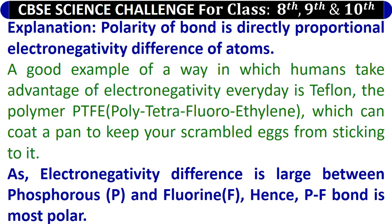Explanation: polarity of a bond is directly proportional to the electronegativity difference of atoms. A good example of a way in which humans take advantage of electronegativity every day is Teflon — the polymer PTFE, which can coat a pan to keep your scrambled eggs from sticking to it. As the electronegativity difference is large between phosphorus P and fluorine F, hence the P-F bond is the most polar.